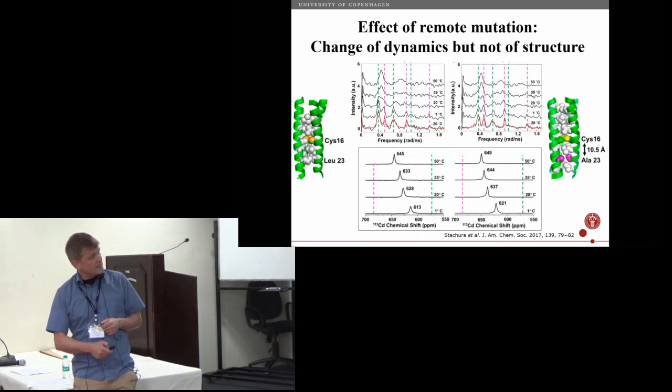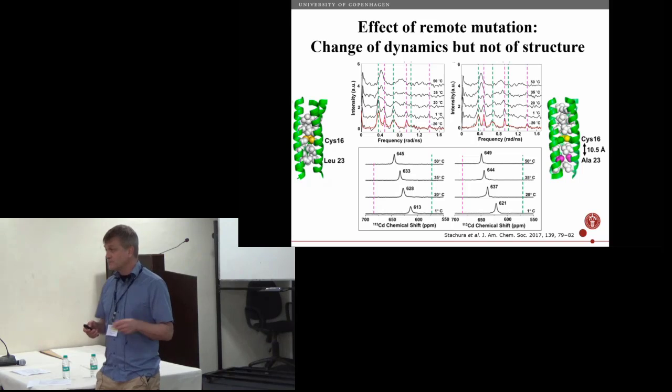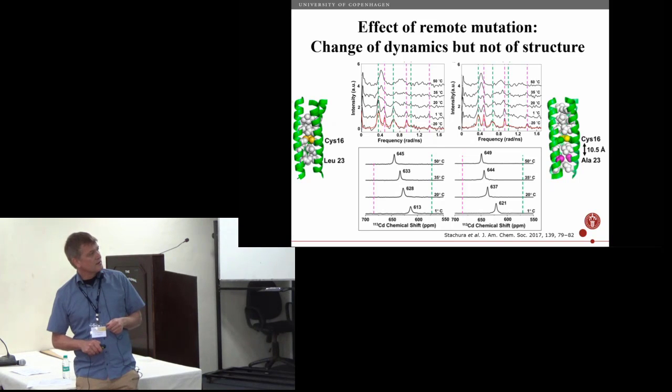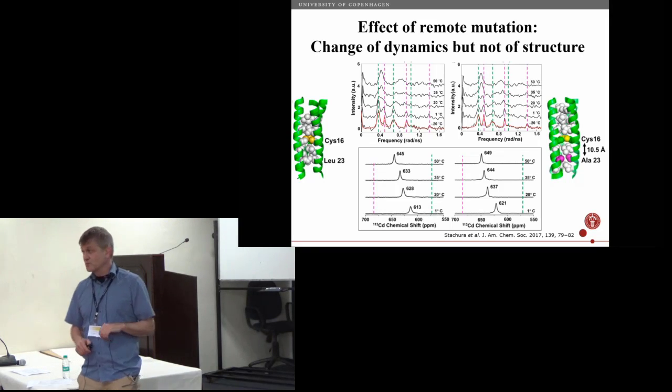We did one more thing and that was to change one amino acid roughly 10 angstroms away from the metal site to see how would that perturb the structure and the dynamics at the metal site. This is the data here at minus 20—the spectra are quite similar and most interesting initially was that the frequencies you observe here are almost, to within the experimental accuracy, the same, so the structure doesn't change by this amino acid substitution.